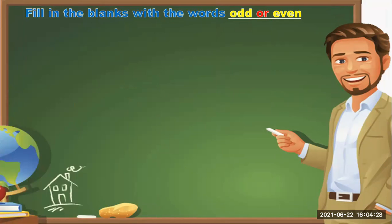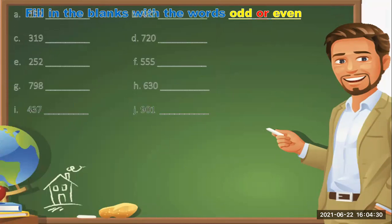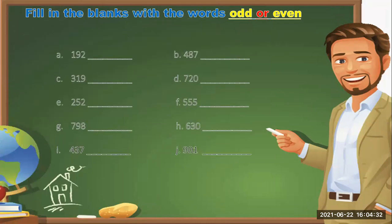Let us fill in the blanks with the words odd or even. There are ten questions. In letter A, 192 is an even number, because the digit 2 is an even number. In letter B, 487 is an odd number, because the digit 7 belongs to the odd numbers.